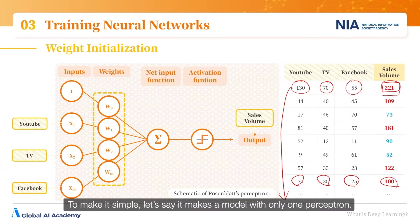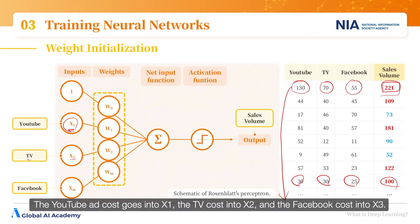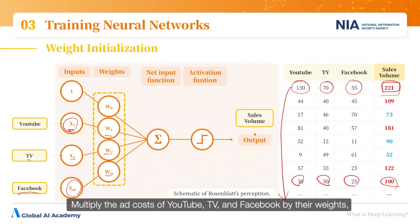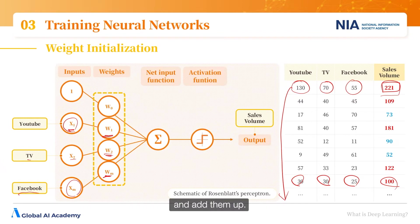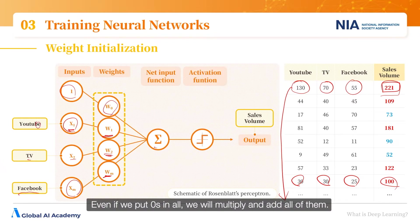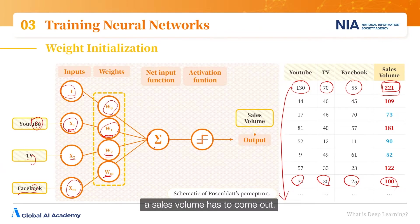To keep it simple, let's say we make a model with only one perceptron. The YouTube ad cost goes into x1, the TV cost into x2, and the Facebook cost into x3. Then the weights multiply the ad costs of YouTube, TV, and Facebook and add them up. Weight w0 means it sells without any ads — even if we put zeros in all inputs and multiply by w1 through the costs, a sales volume still has to come out.